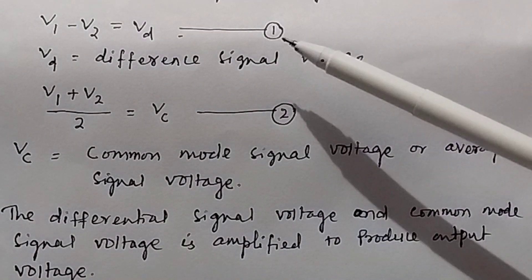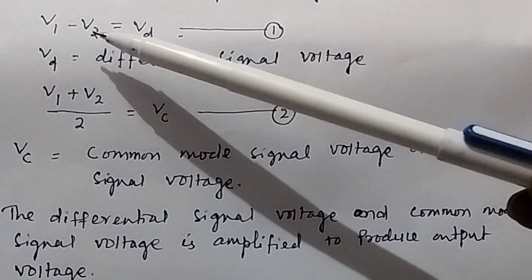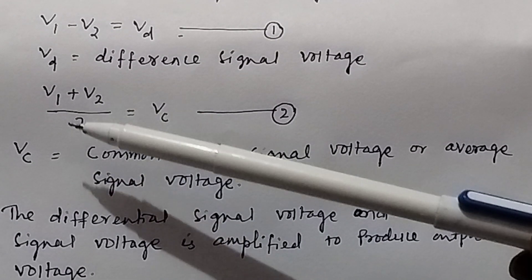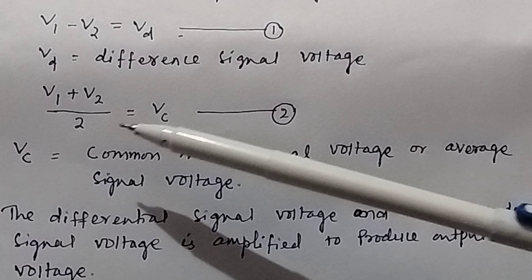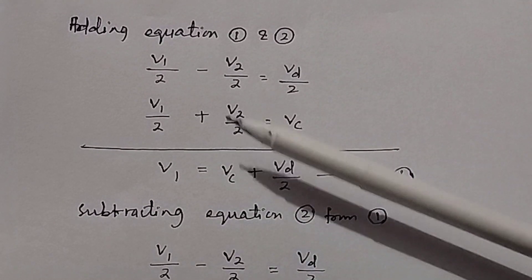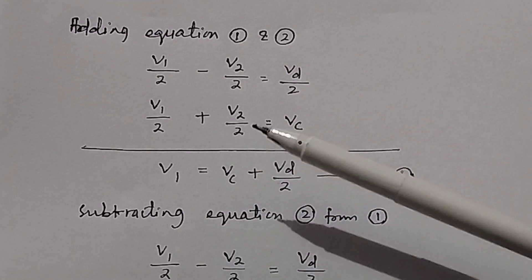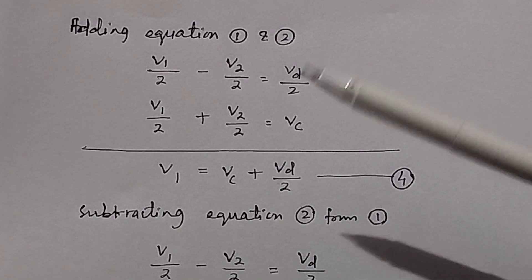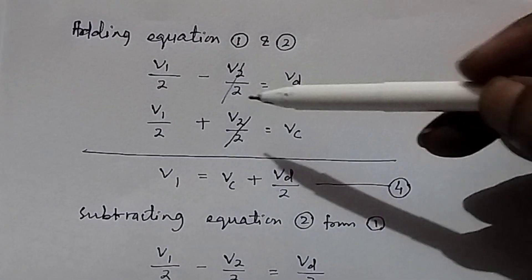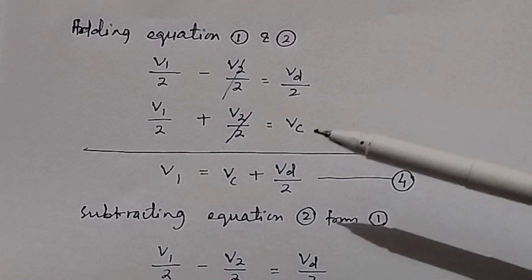Adding equation 1 (the difference signal: V1 minus V2 = Vd) and equation 2 (the common mode signal: (V1 plus V2)/2 = Vc), we divide equation 1 by 2 to get V1/2 minus V2/2 = Vd/2, and equation 2 gives V1/2 plus V2/2 = Vc. Adding these two, the V2 terms cancel, leaving V1 = Vc plus Vd/2.